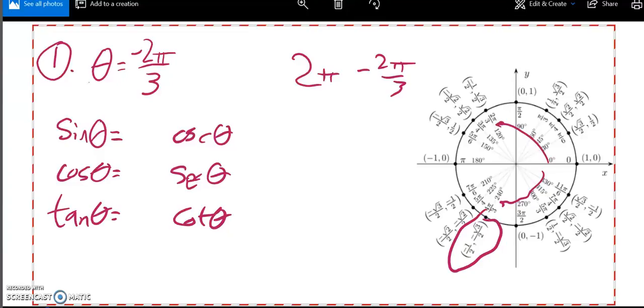And some of these I can just read off of here. Sine, I know, is height, so sine is the y value, negative root 3 over 2. Cosine is that x value, the width, negative 1 half.